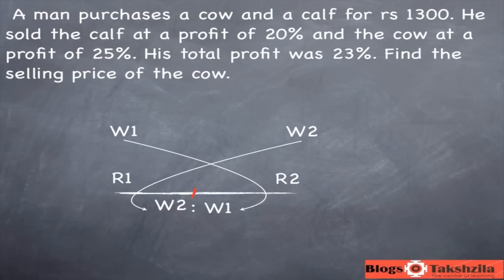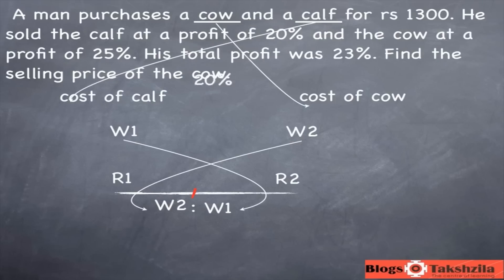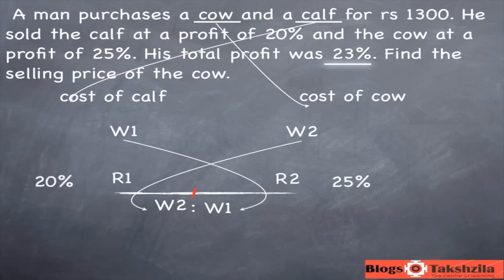His overall profit percentage is also given — 23% — so that comes in the middle. Put 23% there. Now we have 20, 25, and 23. The differences are 3 and 2, so the ratio is 3 is to 2. Flip that ratio and it becomes 2 is to 3.